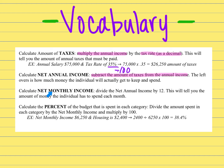The third term is net monthly income. Both net annual income and net monthly income have 'net' in them, which means it's what you actually get. To calculate it, you simply divide your net annual income by 12, and the amount that's left over is how much you can spend each month.